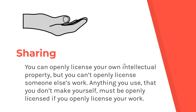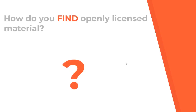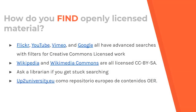From here arise some important questions. How to find material with an open license? Well, it depends on what type of resource you are looking for, but the most important and popular search engines are, for example, Flickr, YouTube, Vimeo, and Google, which include filters for works with Creative Commons licenses.